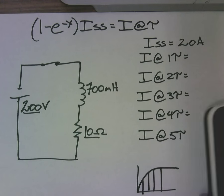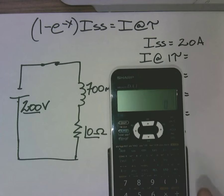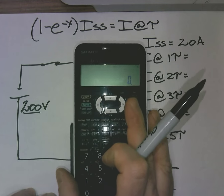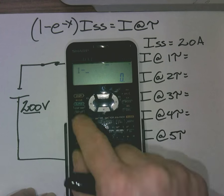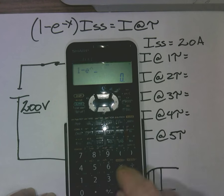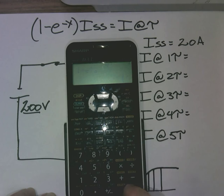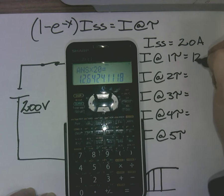Let's walk through this. The current at the first tau. 1 minus second function e to the negative 1 equals and times that by 20 amps and I get 12.6 amps. Quickly done.